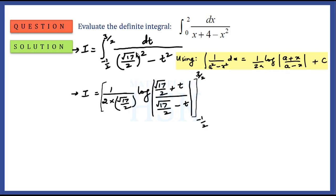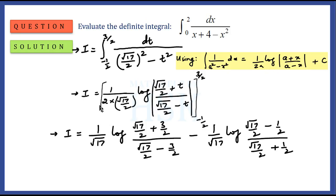The integration gives 1 upon 2a — that is, 1 upon 2 times √17/2 — times log of (√17/2 + t) upon (√17/2 - t), evaluated between limits t = 3/2 and t = -1/2. The 2 and 2 cancel out, giving 1 upon √17. I substitute t = 3/2 for the upper limit and t = -1/2 for the lower limit, then subtract the lower from the upper.